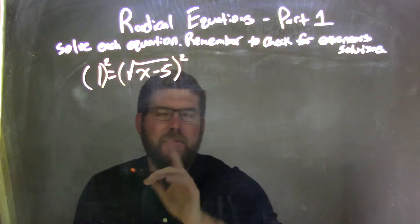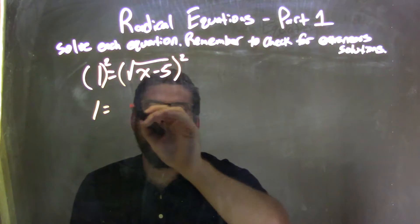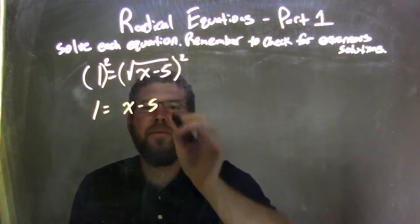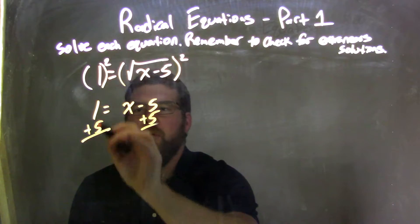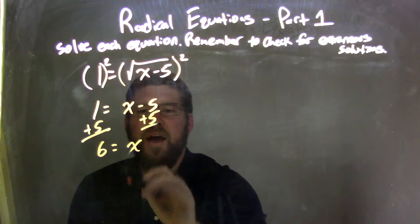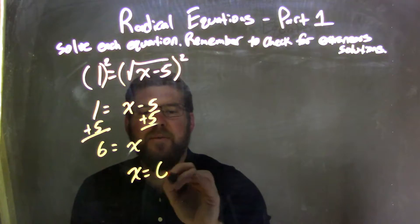1 squared is just 1, equals—the square root eliminates—we're left with x minus 5 here. Add 5 to both sides, giving me 1 plus 5 is 6, equals x. Rearranging this so it's nice and neat, x equals 6.